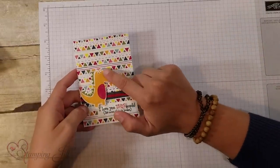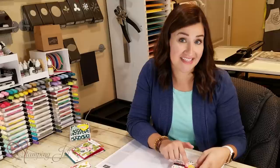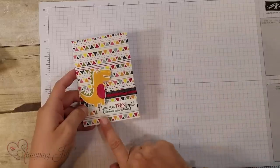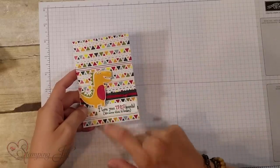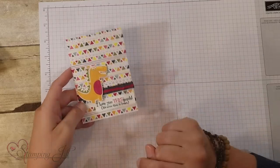This little T-Rex is a cute little guy that I cut directly from the paper using the Dino Dies. And then I just added the little saying, popped it up there and added this denim ribbon, which is really pretty.